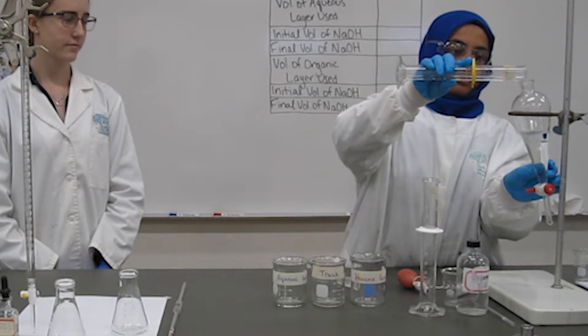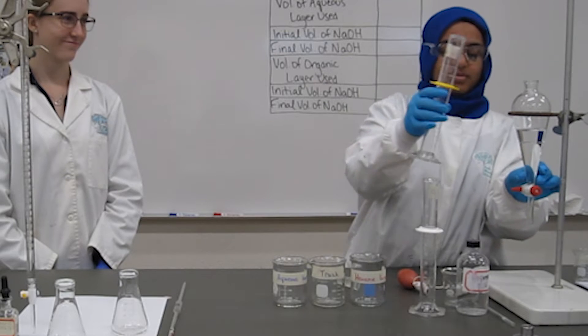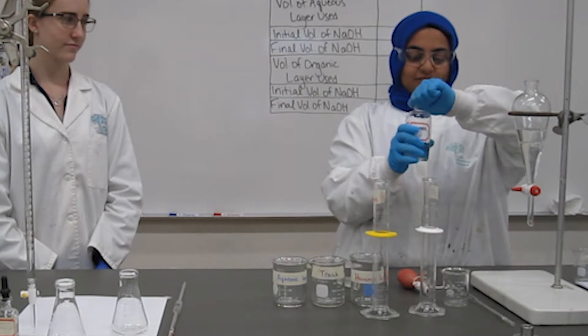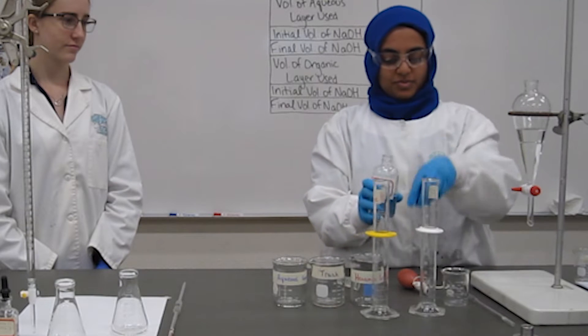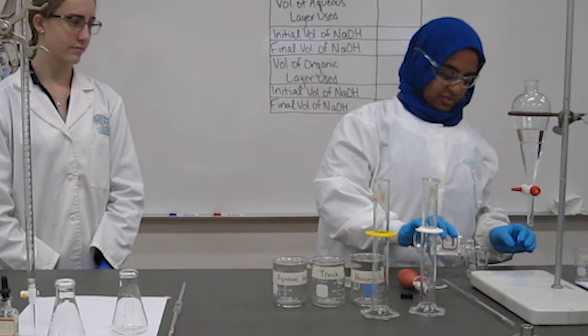As you can see here, we're adding the organic layer on top of the aqueous layer. Once completed, we are going to be adding five milliliters of propanoic acid using a volumetric pipette.